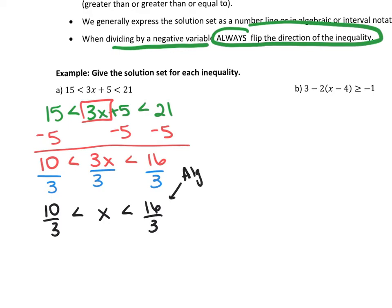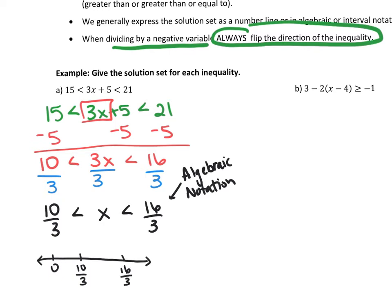This is already written in algebraic notation, which uses inequality symbols and a variable to express the solution. For the number line or graph, I like to put zero on the number line so I know where I'm located. 10/3 is here, 16/3 is here. I need to decide whether to include or exclude the boundaries. Because these symbols don't have the equal sign, we're going to exclude, and we show exclusion using an open circle. I know my solutions for X are all located between those two values, so I shade the number line between them.